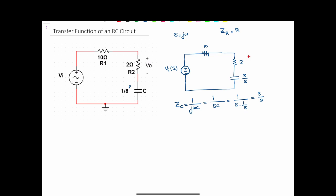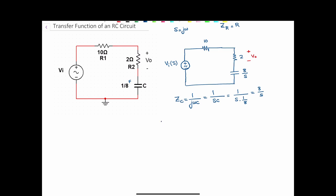In order to find the transfer function of this circuit, we have to find H of S, which is equal to H of ω, and that is equal to Vo of S over Vi of S.